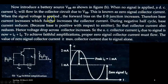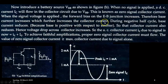When the signal voltage is applied, the forward bias on the emitter-base junction increases. Therefore, the base current increases, which further increases the collector current. During the negative half cycle, the base current reduces because the base is positive with respect to the emitter, so the collector current also reduces.